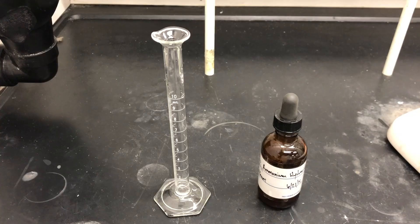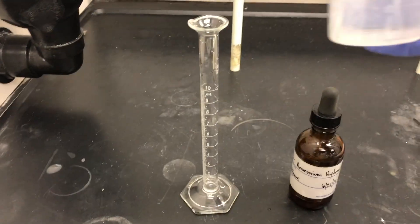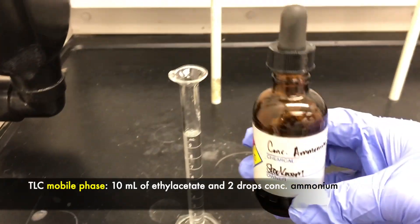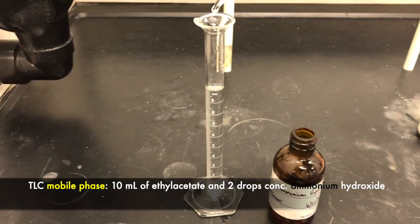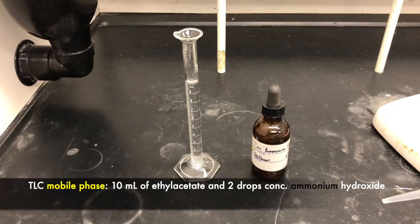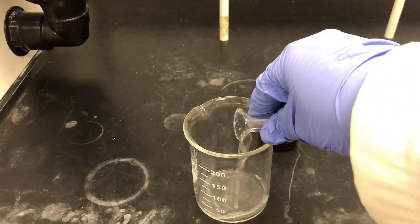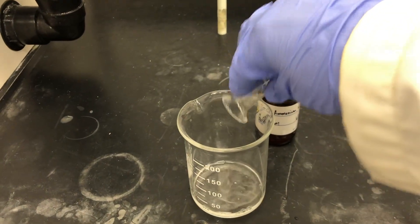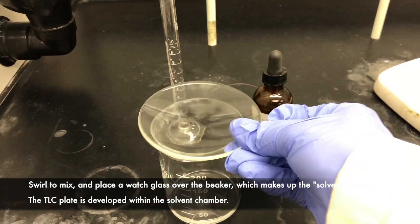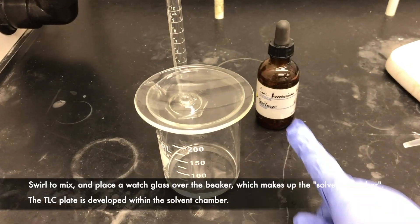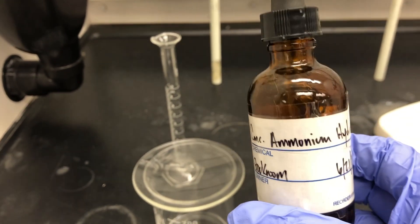For our TLC, the solvent we're going to use is ethyl acetate with two drops of concentrated ammonium hydroxide in a dropper. One, two. Then we'll place the solvent in a beaker, swirl it to mix, and place the glass lid on top. Notice this is a concentrated solution of ammonium hydroxide, so you would need to take care not to breathe it in.